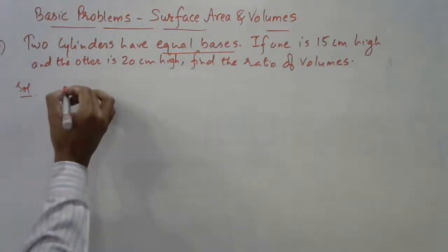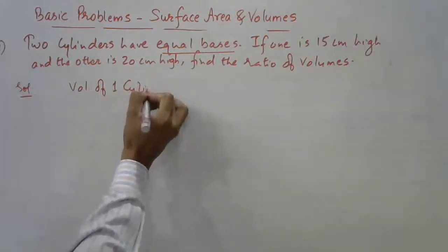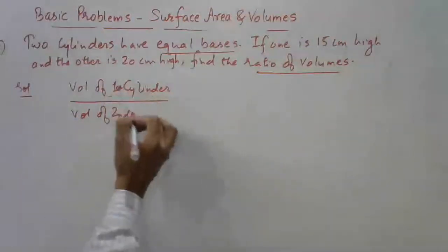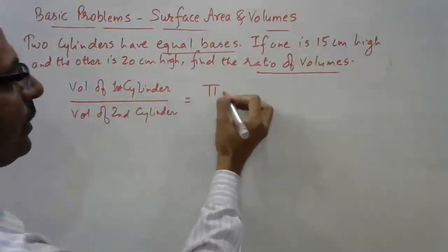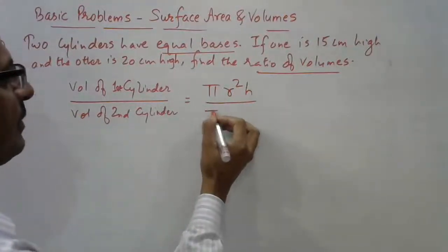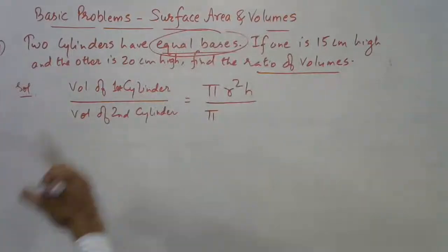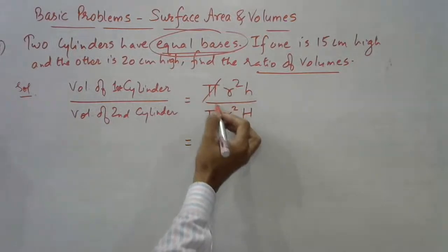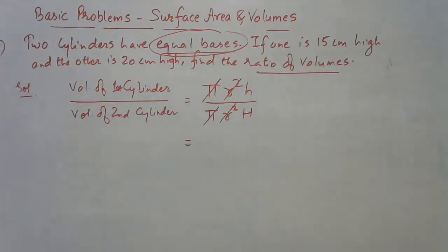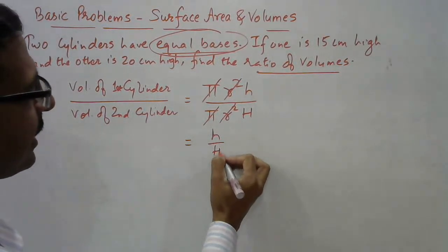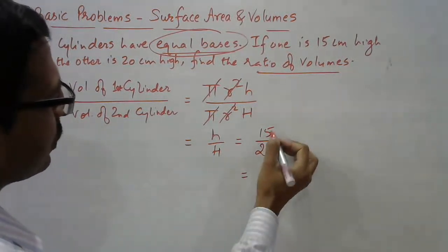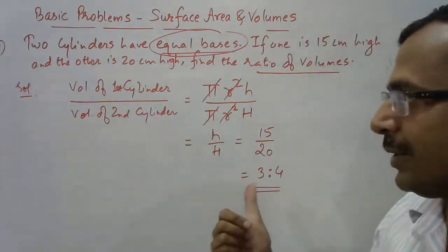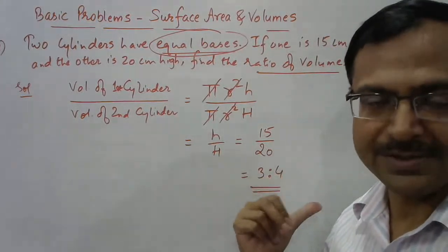Volume of first cylinder / Volume of second cylinder = πr²h₁ / πr²H₂. Since equal radii, π and r² cancel. Only the heights remain: h/H = 15/20 = 3/4. So the ratio of volumes is 3 : 4. Important result: when two cylinders have equal bases, the ratio of their volumes equals the ratio of their heights. Similarly, the ratio of their curved surface areas would also be 3 : 4.